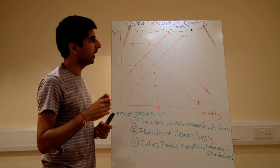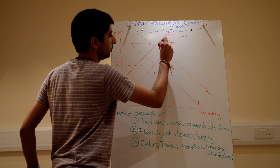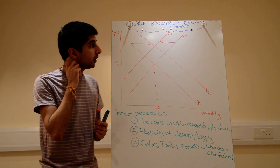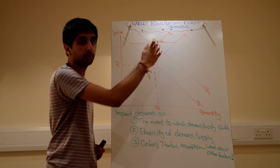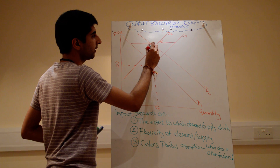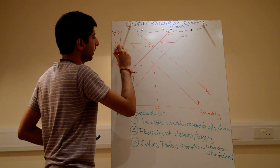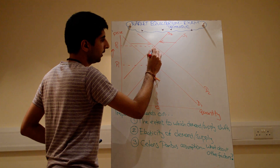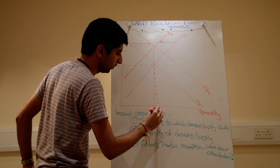Anyway, supply shifted to the left for some reason. We know the new equilibrium price occurs where the new demand curve equals the new supply curve — D2 meets S2 is all the way up here. Label these points: call that P2, that's an increase in price. And down here, label that Q2.